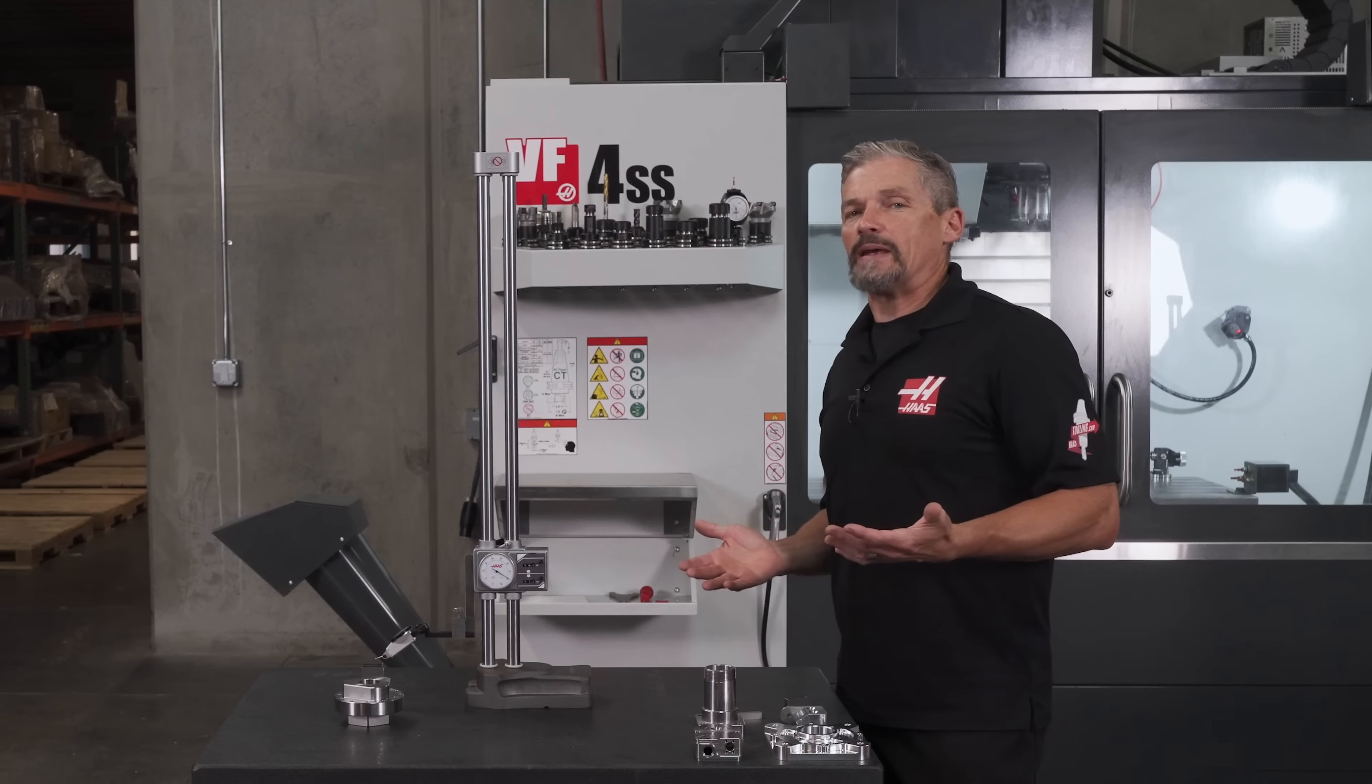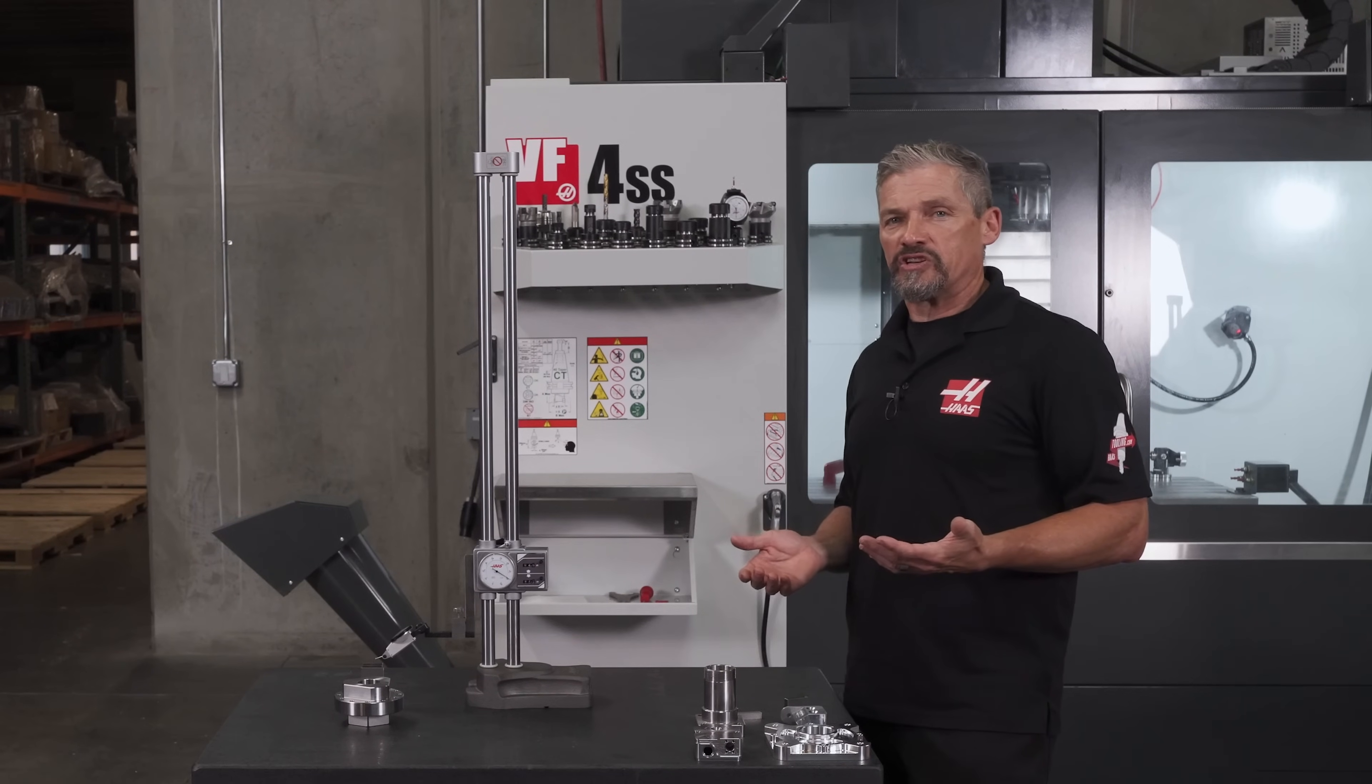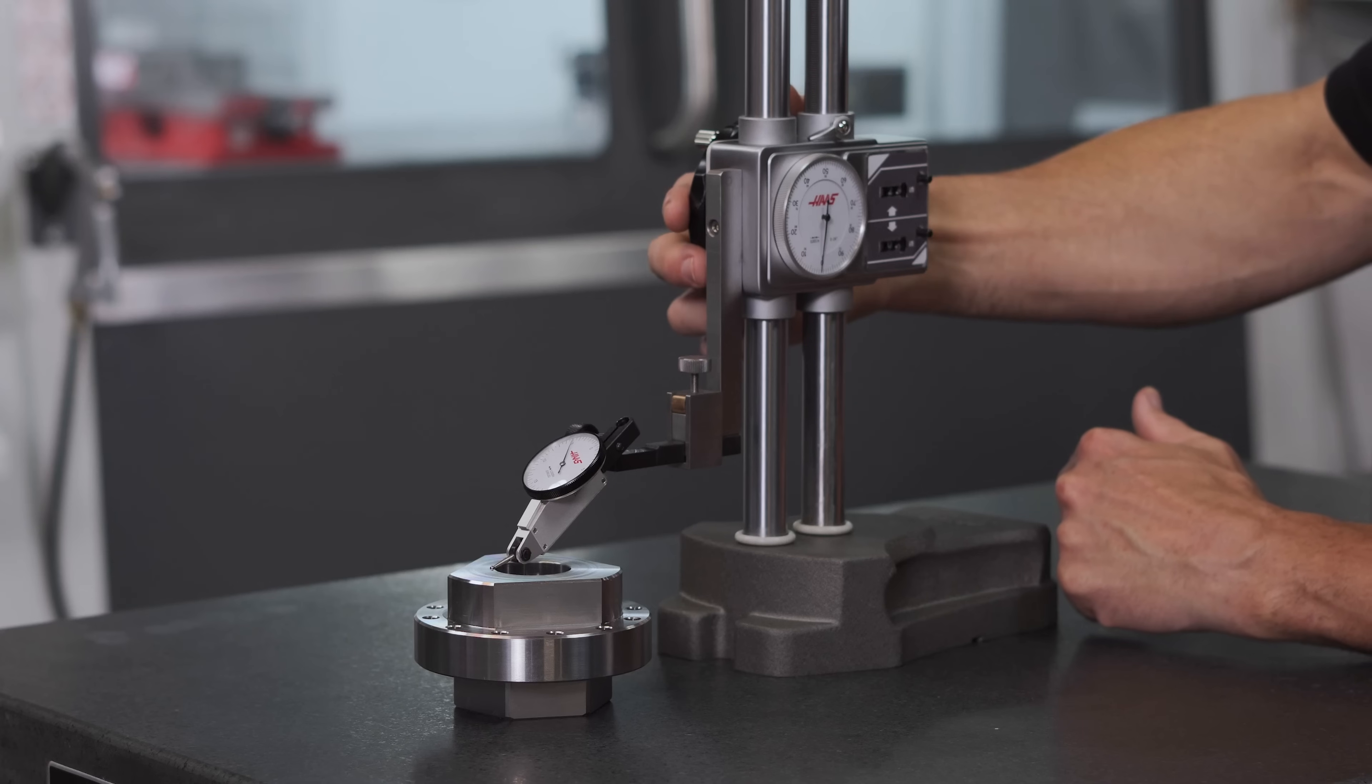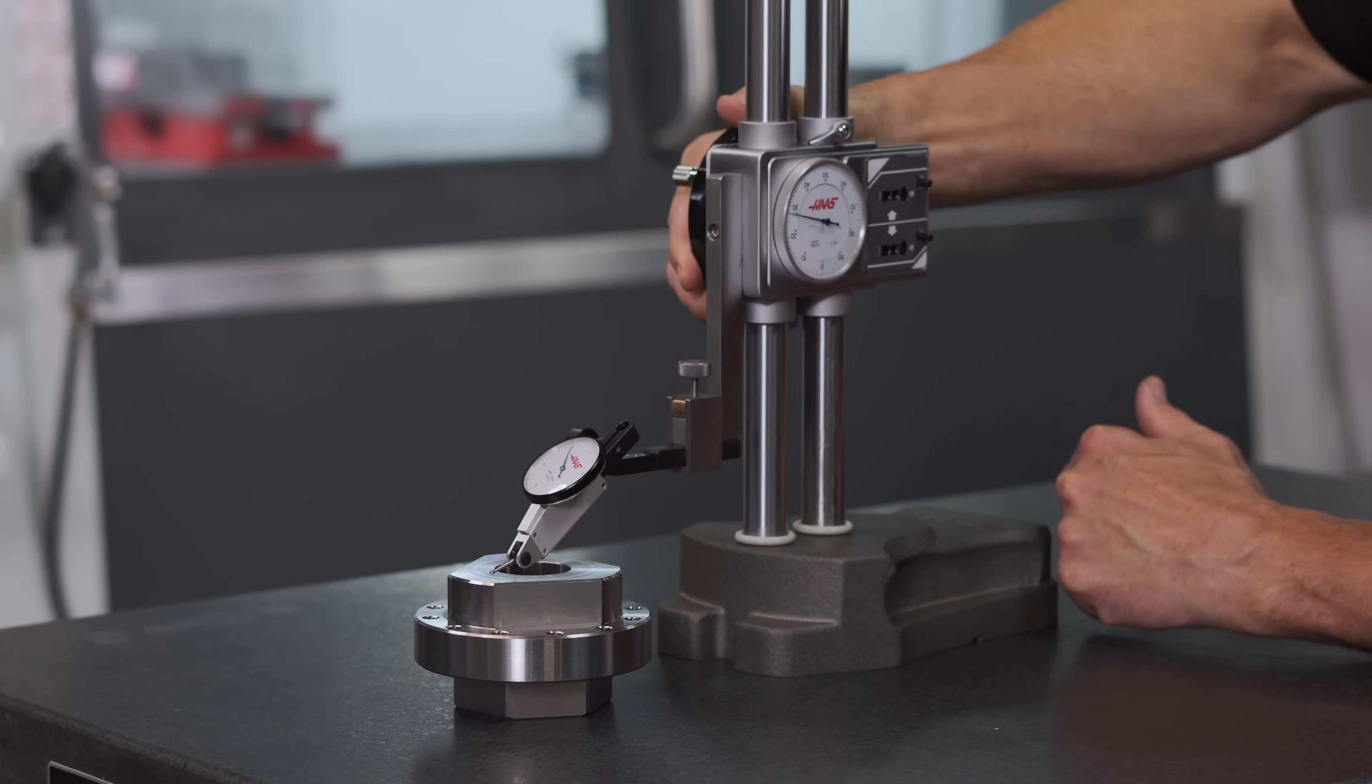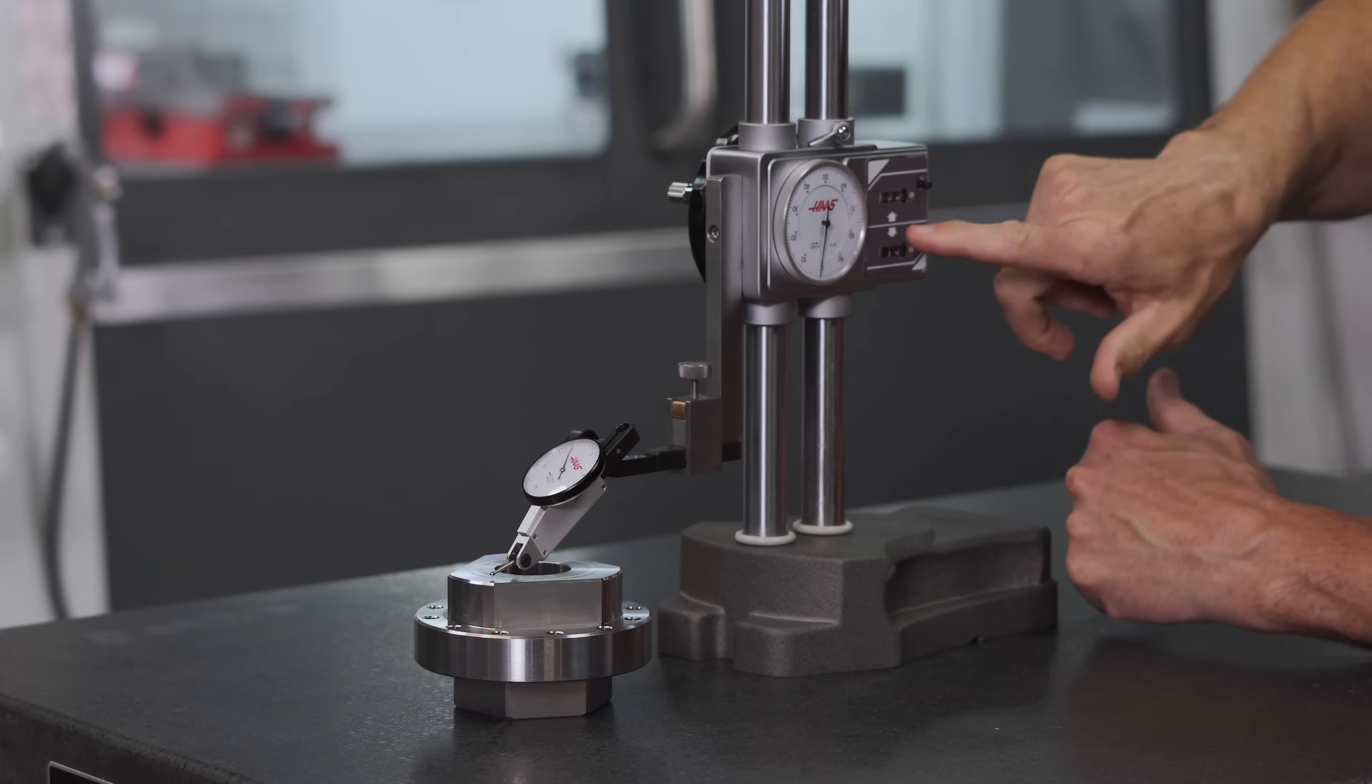So checking that same 2.270 dimension, as we descend from above the part, we see 2 inches in this column and 0.3 inches here on the right-hand column as we get close to the surface.